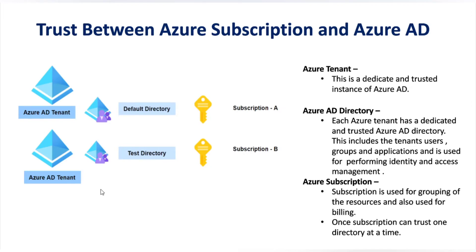Next, let's talk about the trust between an Azure subscription and Azure AD. When you create an Azure account, by default it creates an Azure AD tenant for you — a dedicated and trusted instance of Azure AD. Each Azure tenant has a dedicated and trusted Azure AD directory, which includes the tenant's users, groups, and applications, and is used for performing identity and access management.